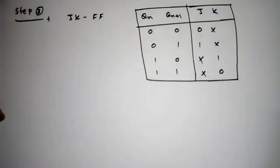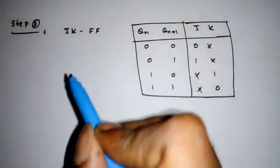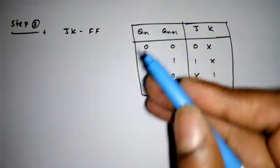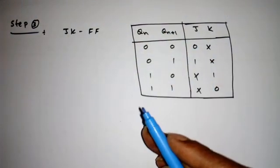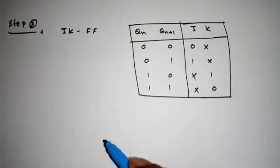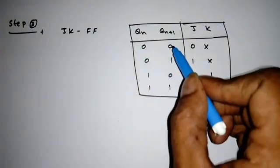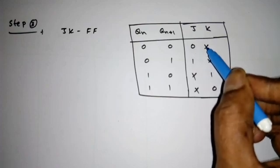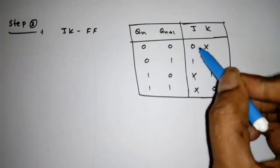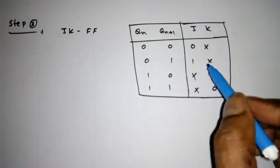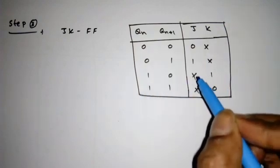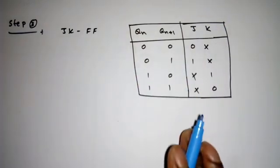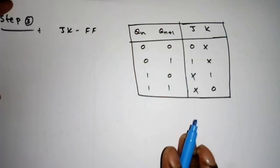Step 3 is the choice of flip-flop. We are going to use JK flip-flop, and for that we need the excitation table. When the present state is 0 and next state is 0, we apply 0 and don't care. For 0 to 1 we apply 1 don't care; for 1 to 0 we apply don't care 1; for 1 to 1 we apply don't care 0.